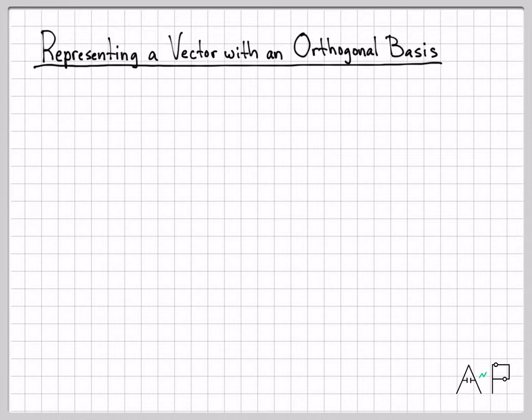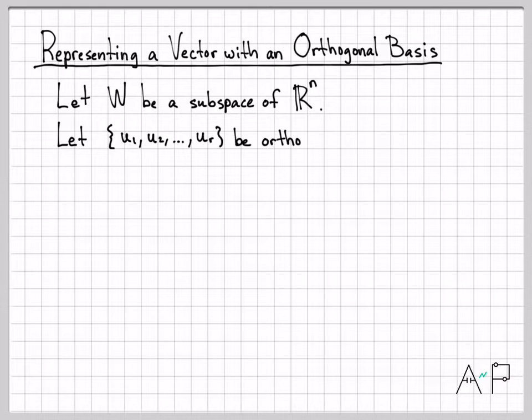So let's talk about how you go about doing that. I'm going to assume that I have some subspace, we'll call it W again, and that's a subspace of R^n. And this is my orthogonal basis for W. So everything in W can be written as a linear combination of these r vectors.